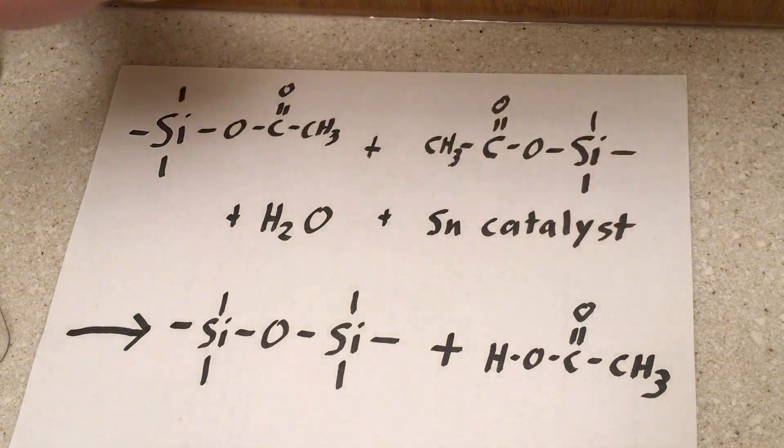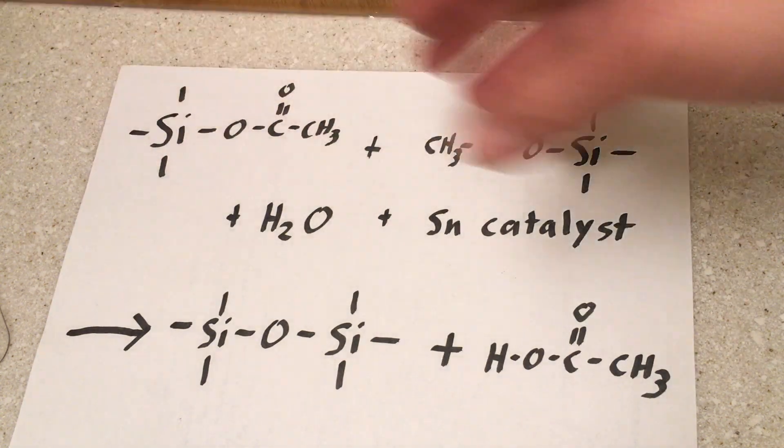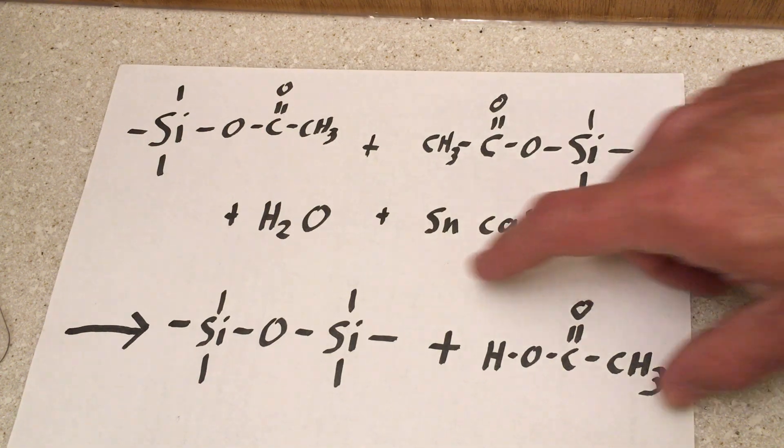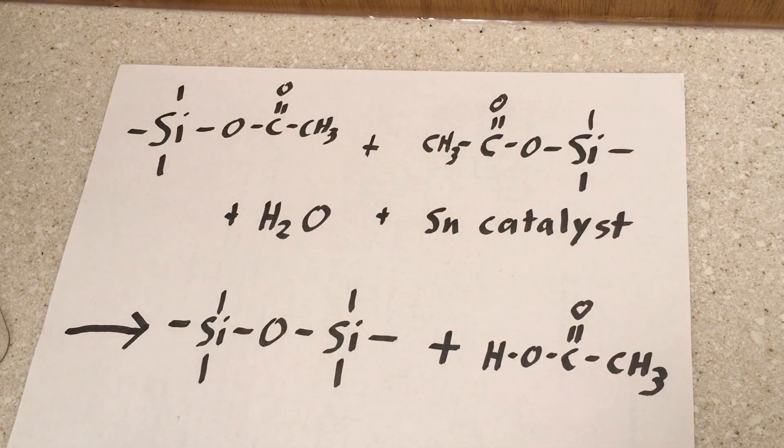And you may notice that some forms of caulk, like this one here, smells a bit like vinegar when it comes out of the tube. Well, that's because it's reacting with moisture in the air and producing that acetic acid. That's what vinegar is.